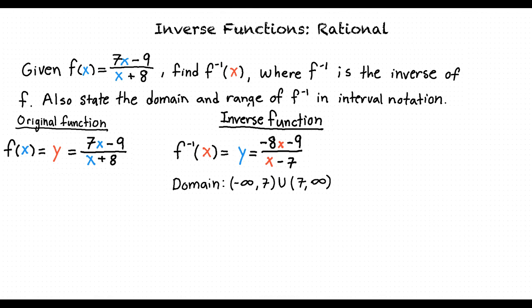For the range of the inverse function, we must take a look at the original function. Since the x and y values of the function and the inverse function are swapped, the domain of the original function is the range of the inverse function. Looking at the original function, we see that the domain of this function cannot include the value of negative 8 because that would make the denominator equal to 0. So the domain of the original function is negative infinity to negative 8 in union with negative 8 to infinity. So then the range of this inverse function would be negative infinity to negative 8 in union with negative 8 to infinity, right? That's exactly right.